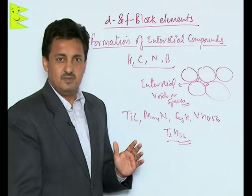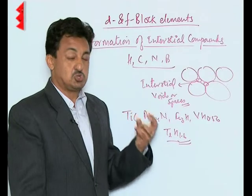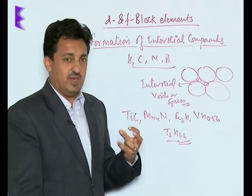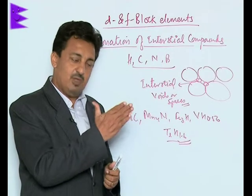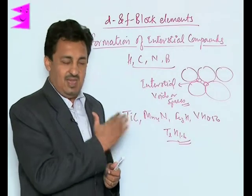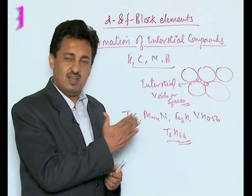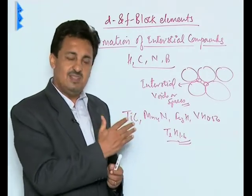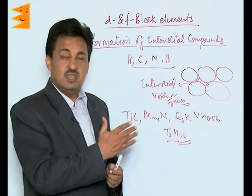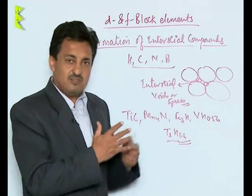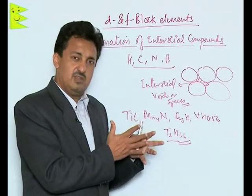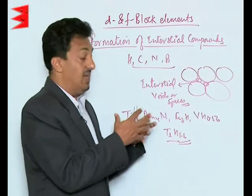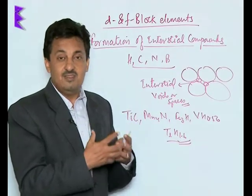They remain inert but become very hard, strong, and tough. This is illustrated by mild steel, hard steel, and cast iron — as the percentage of carbon increases, the hardness of iron increases. Mild steel is 0.5% carbon, hard steel is 1.5%, and it can go up to 3% to become cast iron, because the carbon forms interstitial compounds with iron.